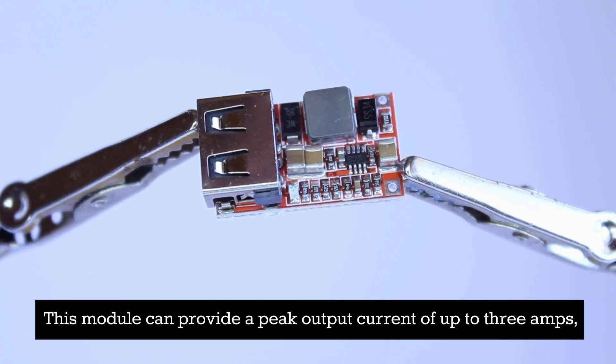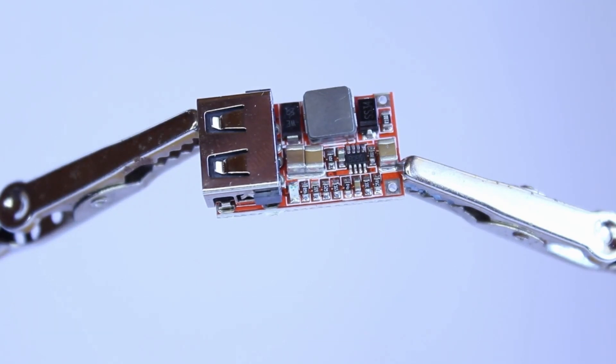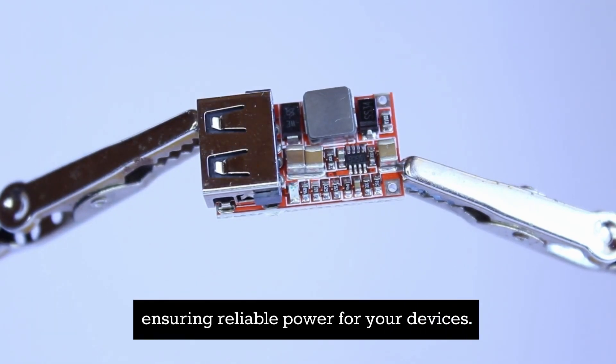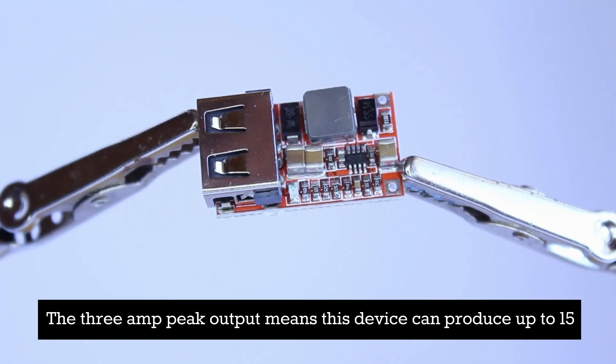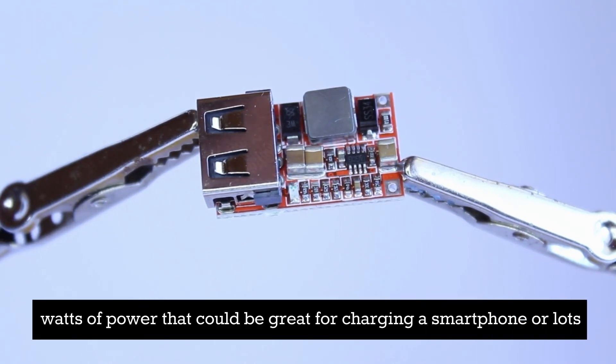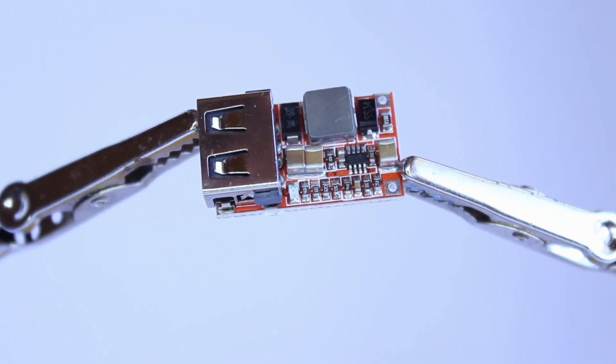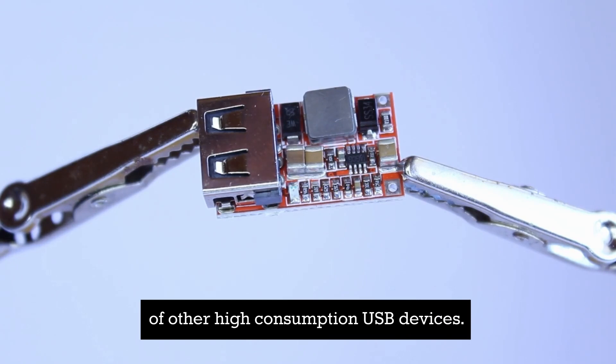This module can provide a peak output current of up to 3 amps ensuring reliable power for your devices. The 3 amp peak output means this device can produce up to 15 watts of power. That could be great for charging a smartphone or lots of other high consumption USB devices.